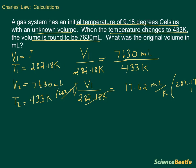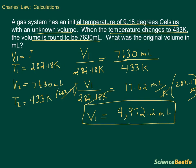And then we're left with V1 equals the product of 17.62 times 282.17. That answer will be in milliliters, so we're going to multiply that now. So 282.17 multiplied by 17.62 will give us the following volume. And this here is the original volume for this problem.